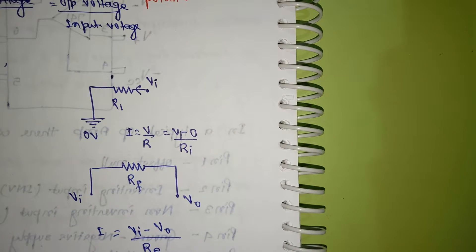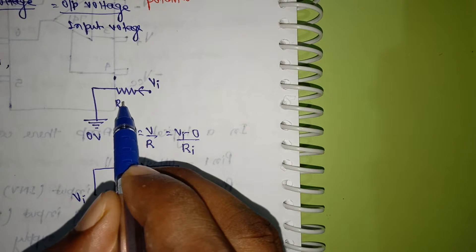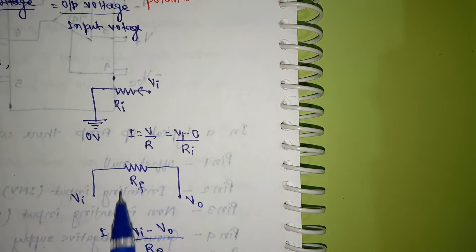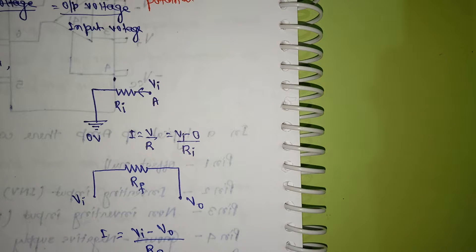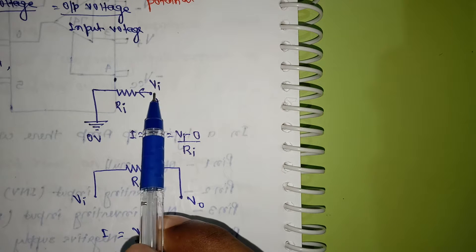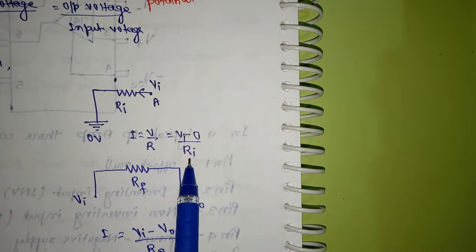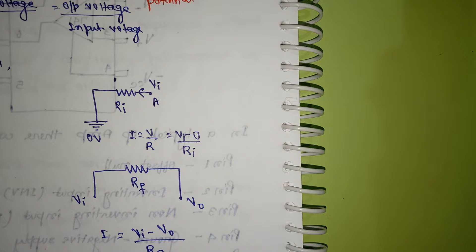At point A, the first branch has input resistor RI. From Ohm's law, V equals IR, so I equals V divided by R. Applying KCL, the current I1 through RI is: input voltage minus zero, divided by RI.